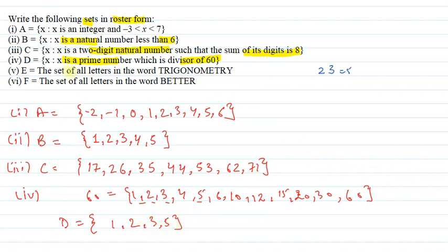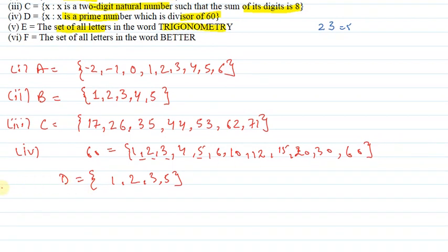Next, fifth part, we have set E: the set of all letters in the word trigonometry. So what does it mean? We have to represent those elements in this set in roster form. In roster form, the set of all letters in trigonometry, we will write all those letters. If a letter is repeated, we will write it only one time.